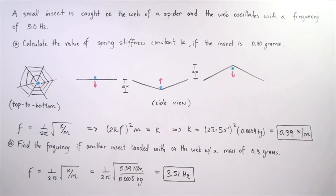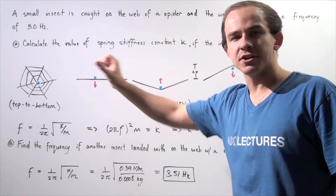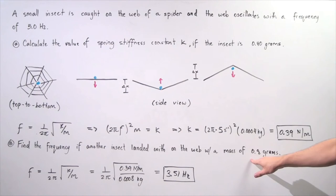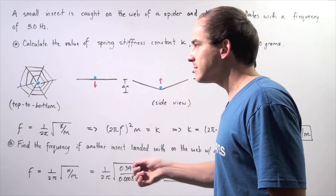So this is our spring constant for the spider web. Now let's suppose that that insect was eaten and a second insect lands on our spider web that has a mass of 0.8 grams. So what is the new frequency of the oscillation of the spider web?